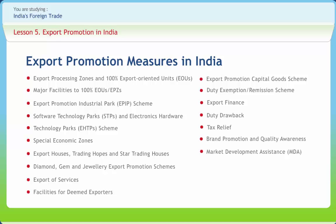The Market Development Assistance (MDA) scheme, originally known as the Market Development Fund, was established in 1963. Its main objective is to stimulate exports and diversify the pattern of export trade, providing assistance in marketing various commodities abroad. The Crucial Balancing Investment scheme envisages capital investments for relieving bottlenecks in infrastructure for export production. The government of India has identified Electronic Data Interchange (EDI) as a high priority in trade facilitation. A State Cell has been established as a nodal agency for interacting with states and union territories on matters concerning exports.